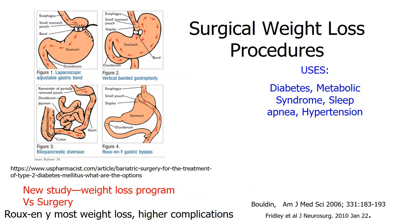Surgical weight loss procedures include: laparoscopic adjustable gastric band — a band placed around the top of the stomach creating a small pouch; vertical banded gastroplasty — banding from the esophagus into the stomach; and Roux-en-Y gastric bypass — where the intestine is hooked up directly to the stomach, bypassing much of the digestive tract. The Roux-en-Y achieves the most weight loss but also has a higher complication rate.